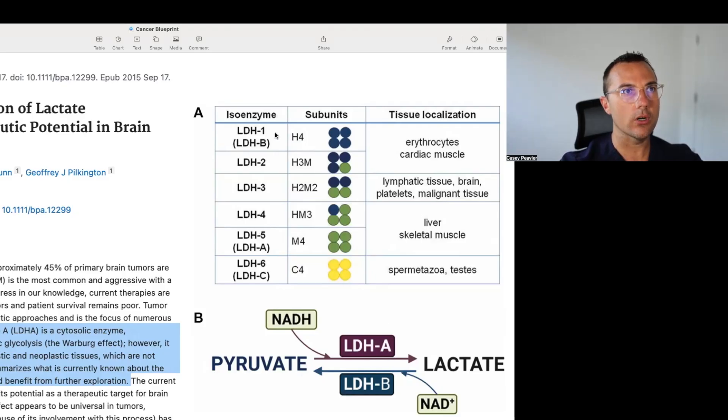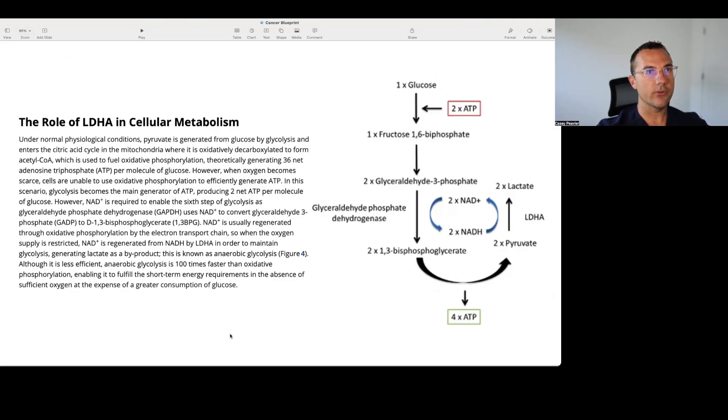We see here that there are multiple isoforms of LDH in different parts of the body, LDH 1 through 6. And what it has here for us is the kind of basic cellular mechanisms of LDH. It says here the role of LDH in cellular metabolism. It says under normal physiologic conditions, pyruvate is generated from glucose by glycolysis and enters the citric acid cycle or the TCA cycle in the mitochondria where it is oxidatively decarboxylated to form acetyl-CoA, which is used to fuel oxidative phosphorylation.